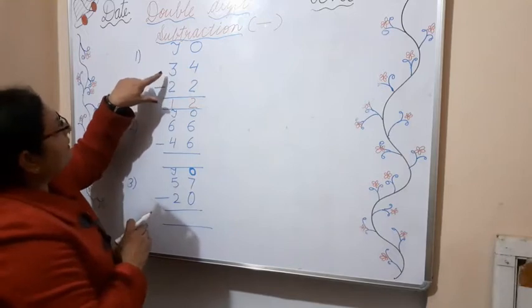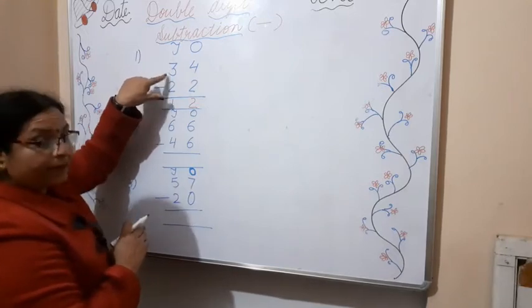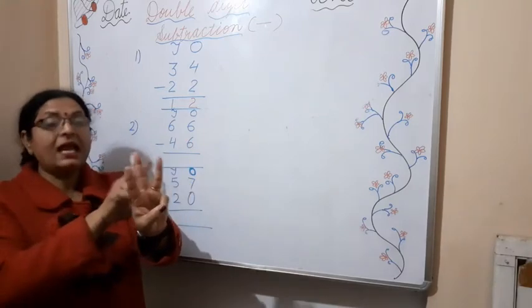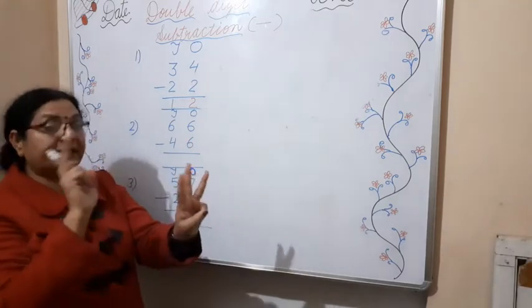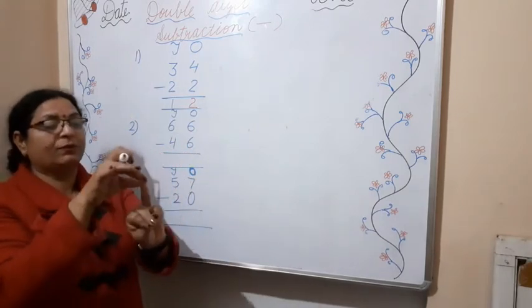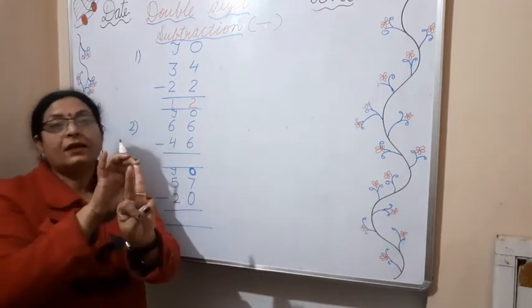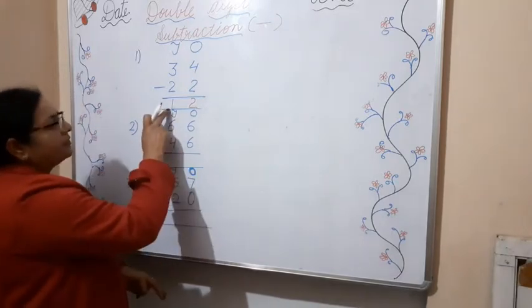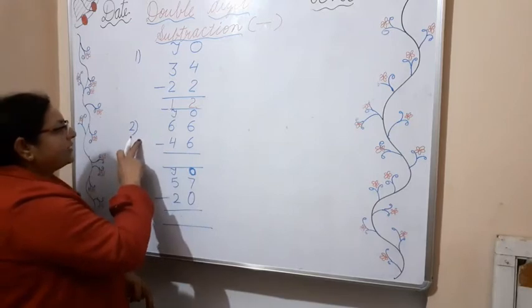So come to the tens side. My first number is 3, so you have to take out 3 fingers: 1, 2, 3. And you have to subtract 2. How will you do it? 1 and 2. So how many fingers do we have left? 1. So your answer is 1. Go for the next example.